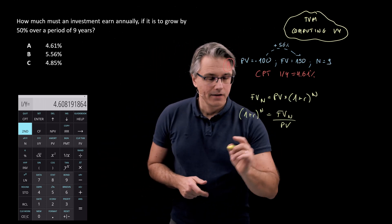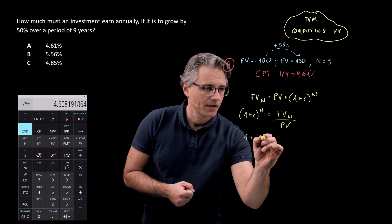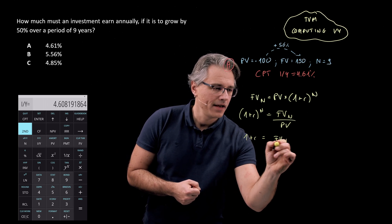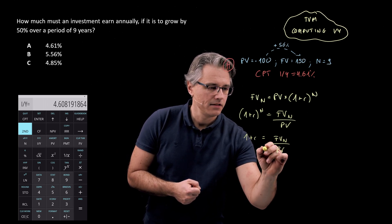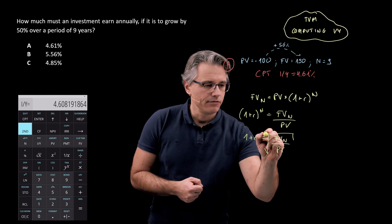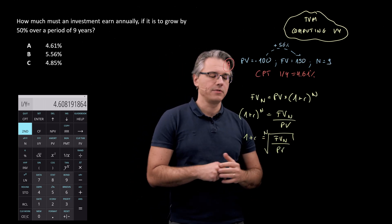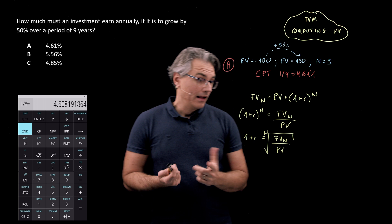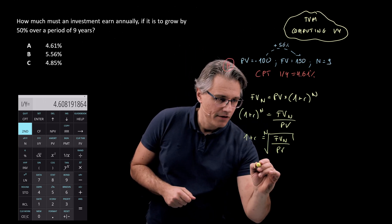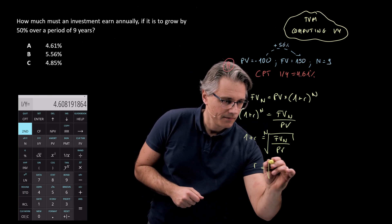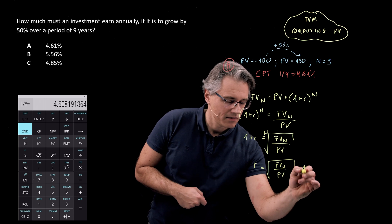Now, 1 plus R equals FVN divided by PV, and we take the root with the exponent of the power of N. And we are therefore left with R equals this much minus one.